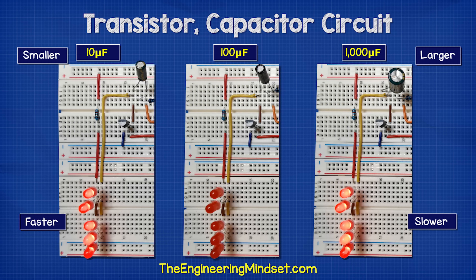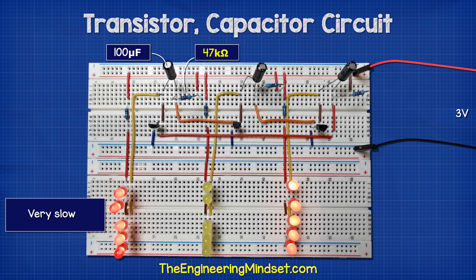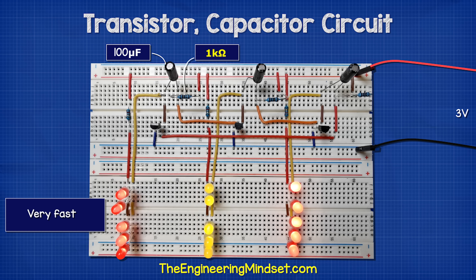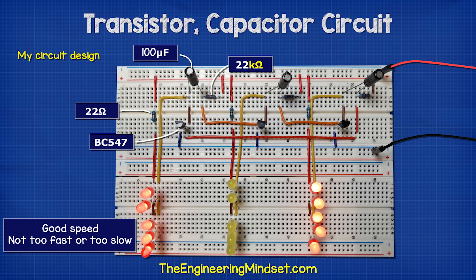The resistor also changes the charging time. If I use a 100 micro farad capacitor and a 10 kilo ohm resistor, it flashes quite fast. If we use a 47 kilo ohm resistor, we see it is very slow. If we use a 1 kilo ohm resistor, it flashes very, very fast. So the larger the resistor, the slower the flashing. I'm going to use a 22 kilo ohm resistor and a 100 micro farad capacitor because I think this works well, it looks very nice, and the capacitor is physically quite small.